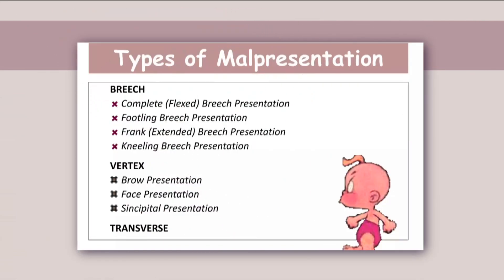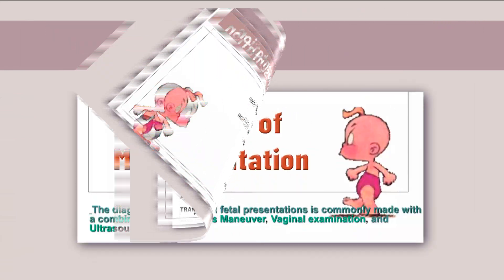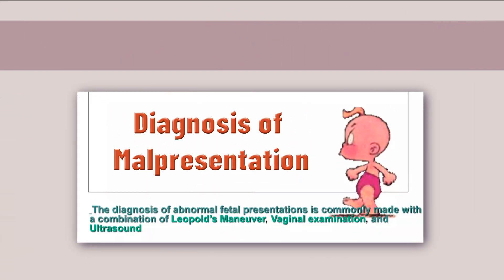The types of malpresentation can be divided into three: breech, vertex, and transverse. Breech presentation is further divided into complete breech, footling presentation, frank breech presentation, and kneeling breech presentation. Vertex malpresentations include brow presentation, face presentation, and sinciput presentation. The last type is transverse presentation. The diagnosis of abnormal fetal presentation is commonly made with a combination of Leopold's maneuvers, vaginal examination, and ultrasound.